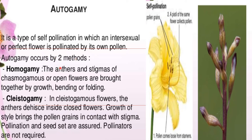Autogamy occurs by two methods. First is homogamy, where the anther and stigma of the chasmogamous or open flower are brought together by growth, bending, or folding. Second is cleistogamy, where in cleistogamous flowers the anther dehisces inside the closed flower and growth of the style brings the pollen grains in contact with the stigma. Pollination and seed set are assured and pollinators are not required.